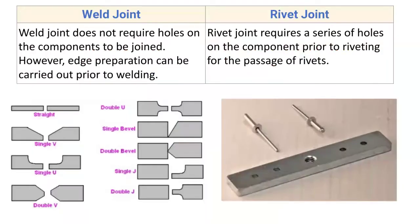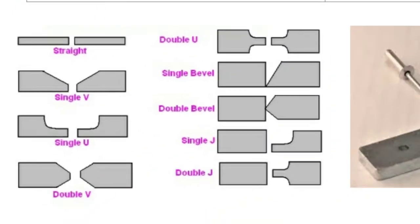The first difference: weld joint does not require holes on the component to be joined. However, edge preparations can be carried out prior to welding. The holes need not be drilled over the parent component, but edge preparation is required and it depends on the thickness of the parent material.